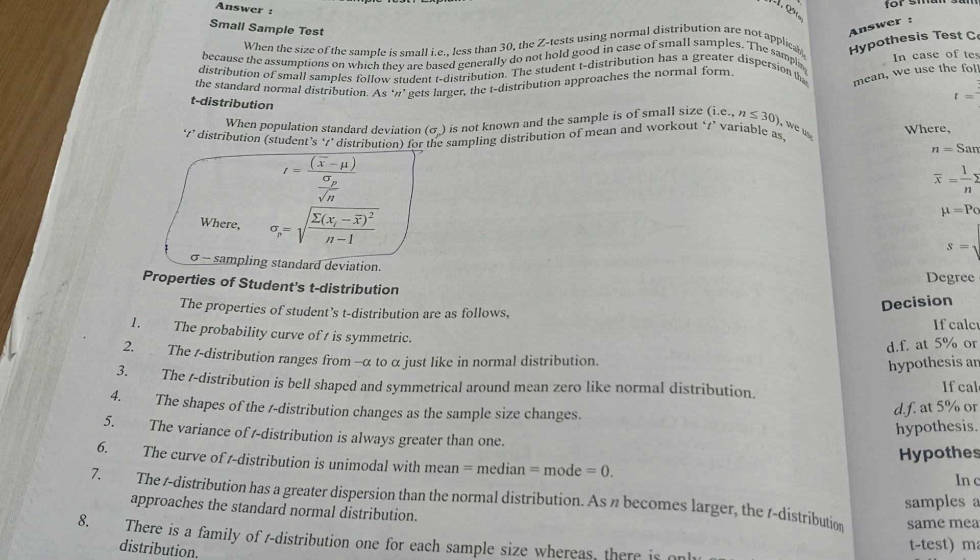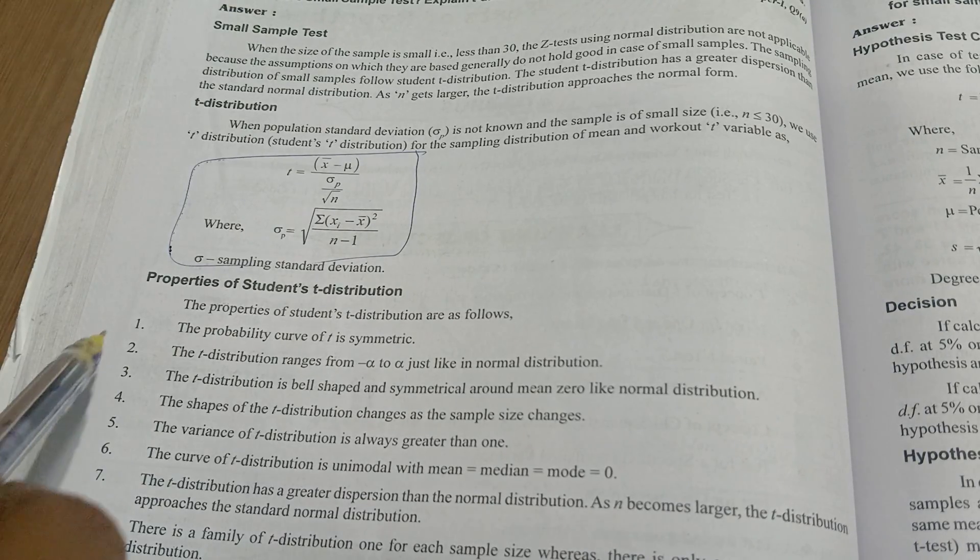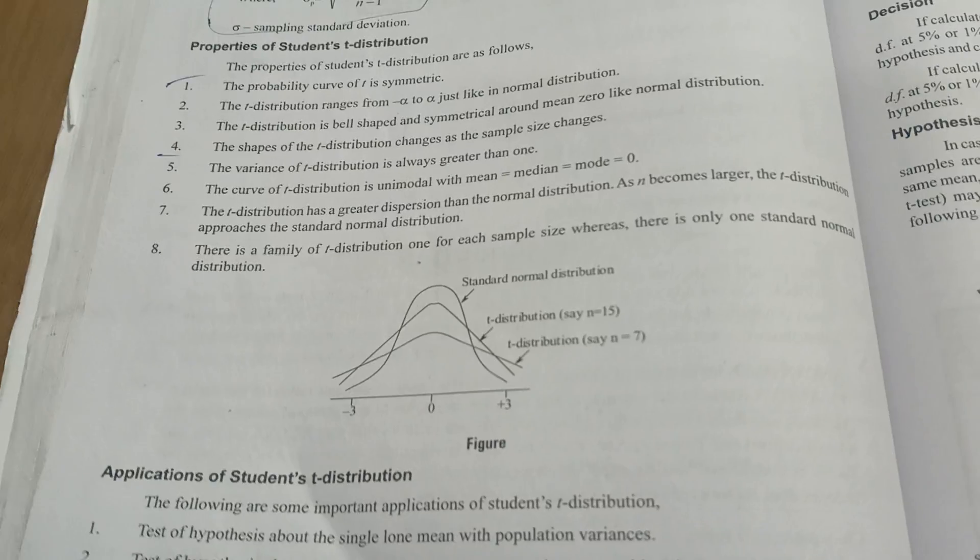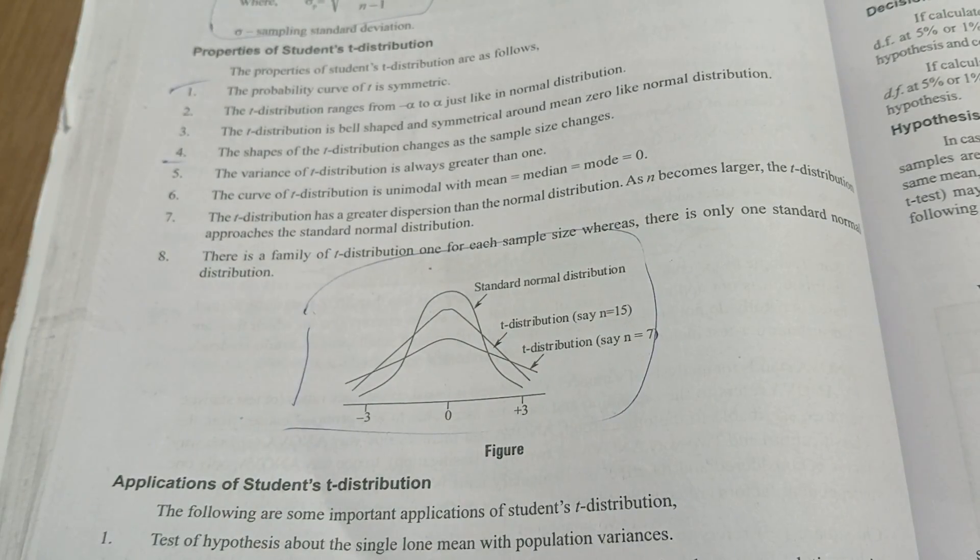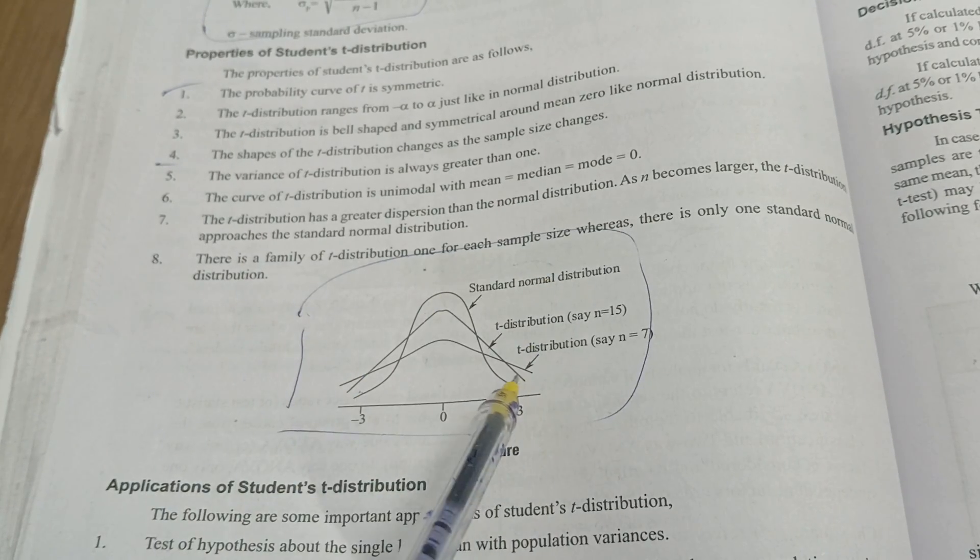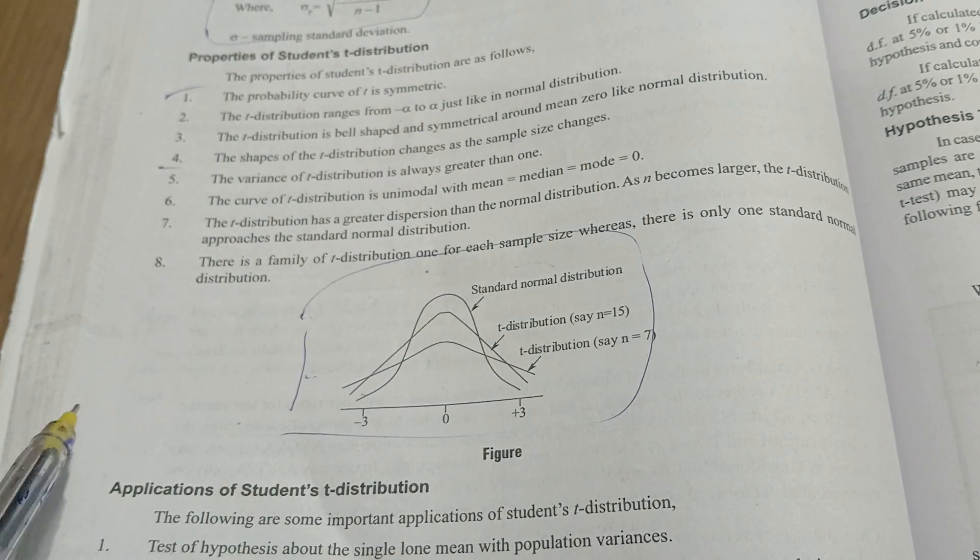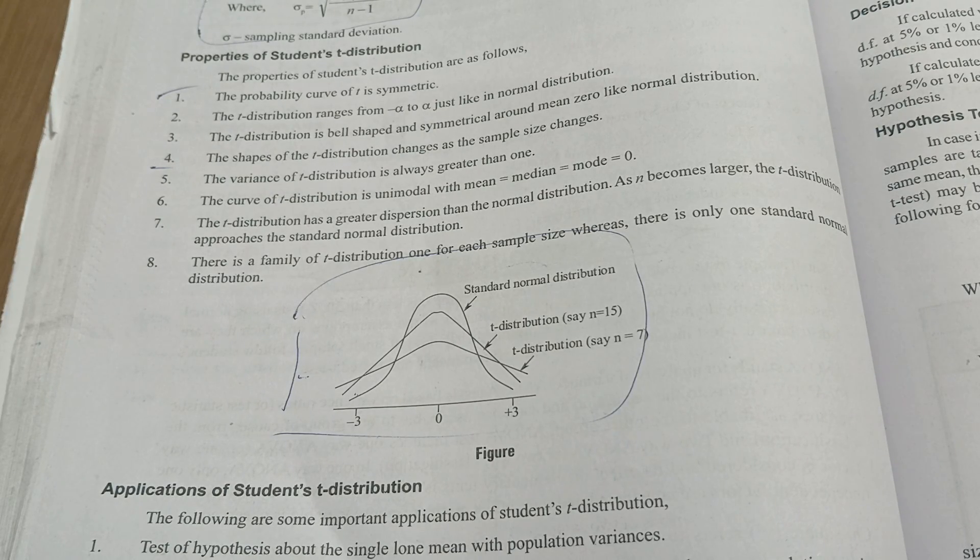So t-distribution properties - it will have the probability of symmetric and asymmetric. It is a bell-shaped curve, means I will show the diagram also. So this is the z, sorry this is the t-test diagram. So t-test, it will have the bell-shaped thing, it will have the greater than one, it will have the mean median mode equal to zero. It will have many properties. Minimum five to six properties you need to understand and write it.